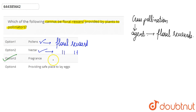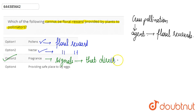The next option is fragrance. Fragrance is essentially a signal — it directs pollinators to carry out pollination. It is not any sort of floral reward; rather, it is a signal that directs pollinators to a particular flower. Hence, fragrance cannot be a floral reward provided by plants to pollinators, making it a potential answer.